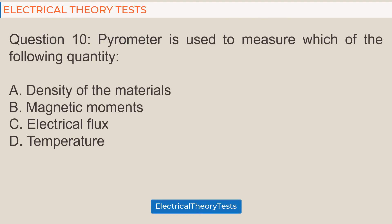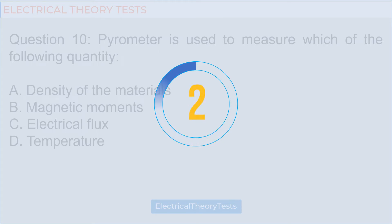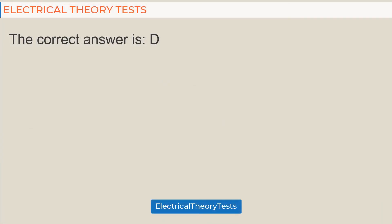Question 10: A pyrometer is used to measure which of the following quantities — a) density of materials, b) magnetic moments, c) electrical flux, d) temperature. The correct answer is d) temperature.